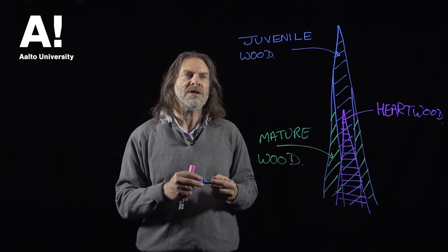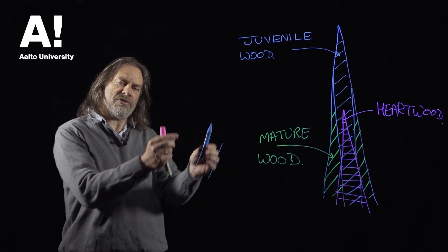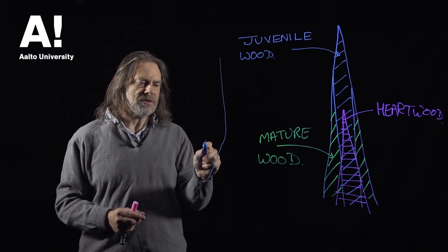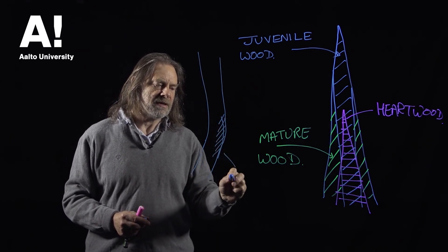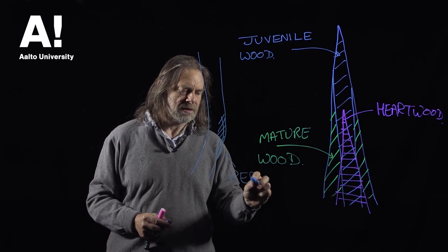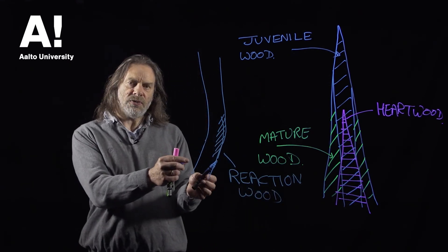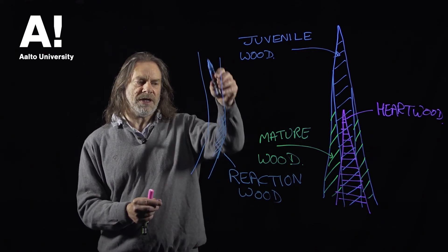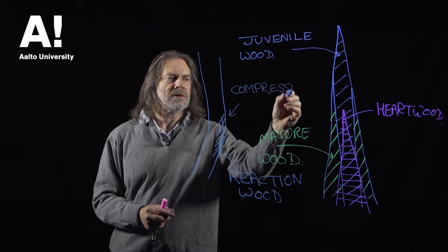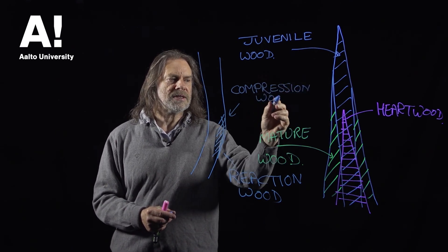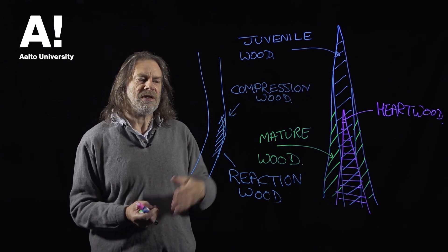And there's one more complication. In softwoods, if the tree starts growing at an angle, there will be a correction mechanism that comes into place to make the tree grow straight. The way that happens in softwoods is by laying down what's called a reaction wood. In softwoods, that wood pushes to make the tree grow upright again, so it's referred to as compression wood. That's quite easily identified in softwoods because it has a much higher lignin content, so it shows up quite obviously in microscopic sections.